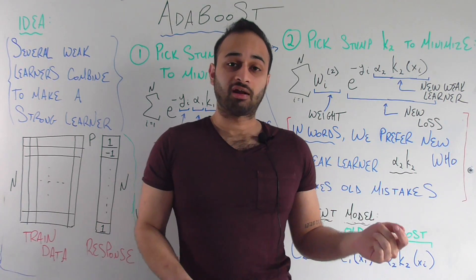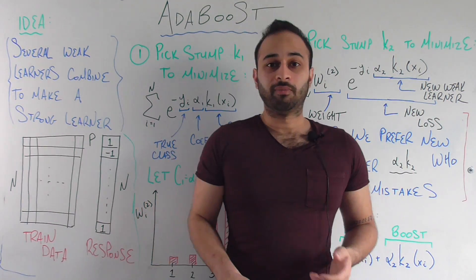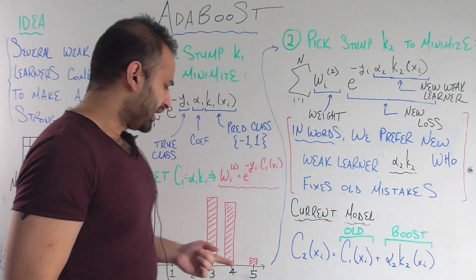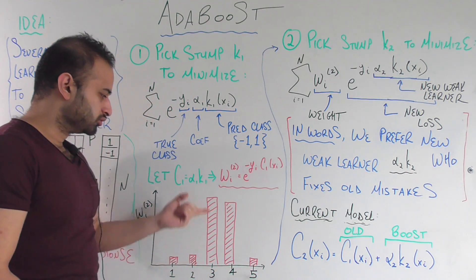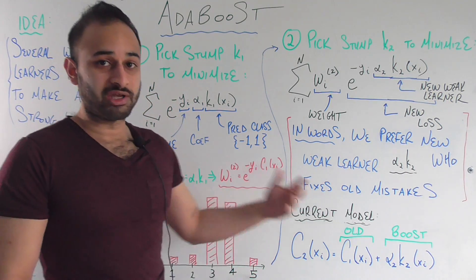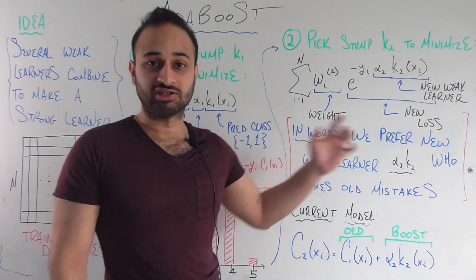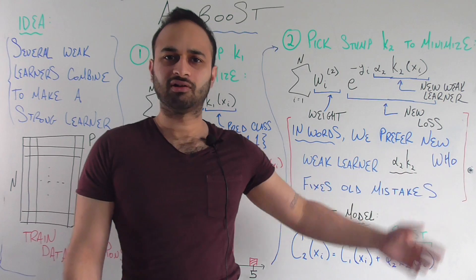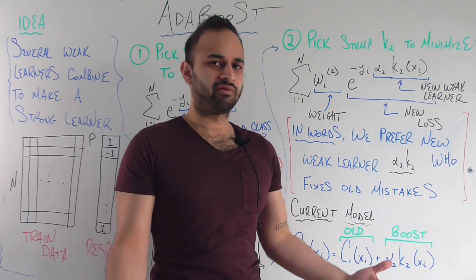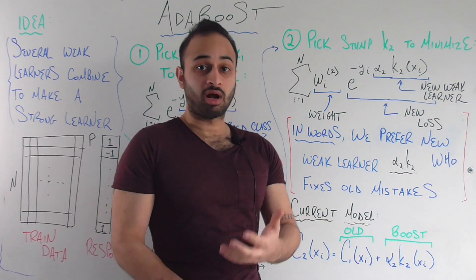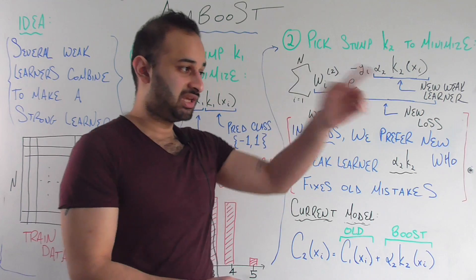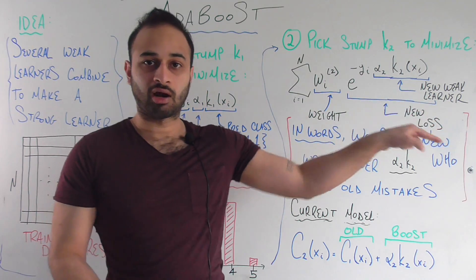One last issue with AdaBoost is that we might have stubborn observations, which means that we might have observations whose weights are high in this step, high in the next step, and whose weights just consistently stay high — they're just really hard to predict for whatever reason. The reason this is a problem in AdaBoost is because it's going to just keep focusing on that observation.